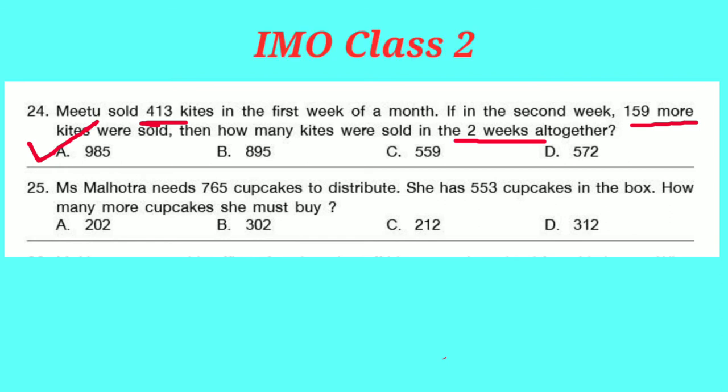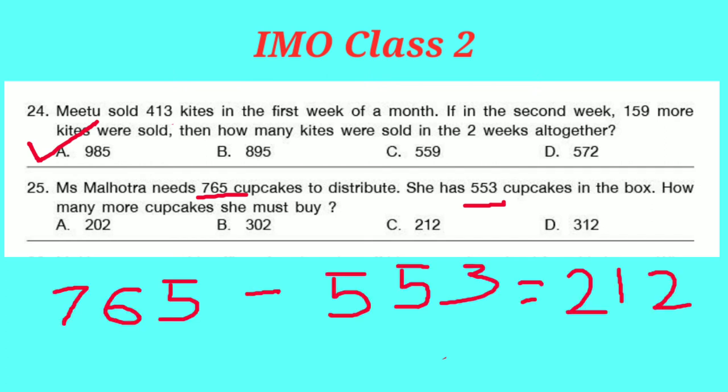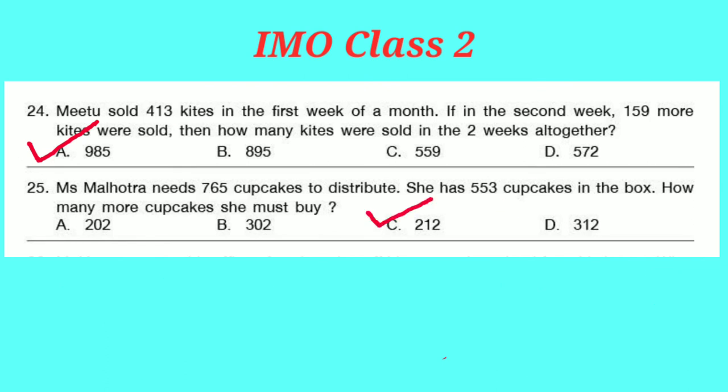Question number 25: Mrs. Malhotra needs 765 cupcakes to distribute. She has 553 cupcakes in the box. How many more cupcakes must she buy? 765 − 553 = 212. Option C is correct.